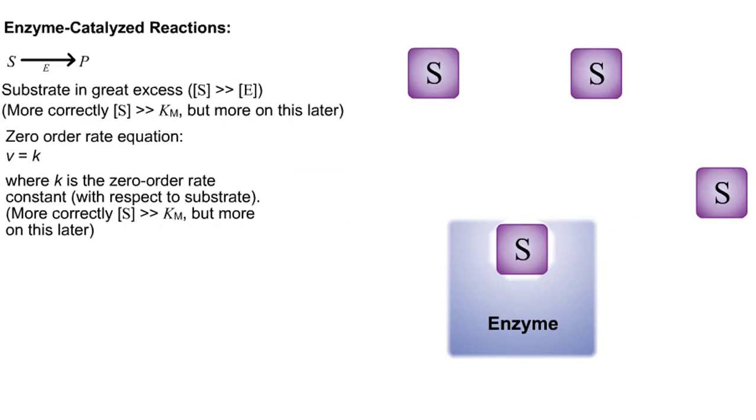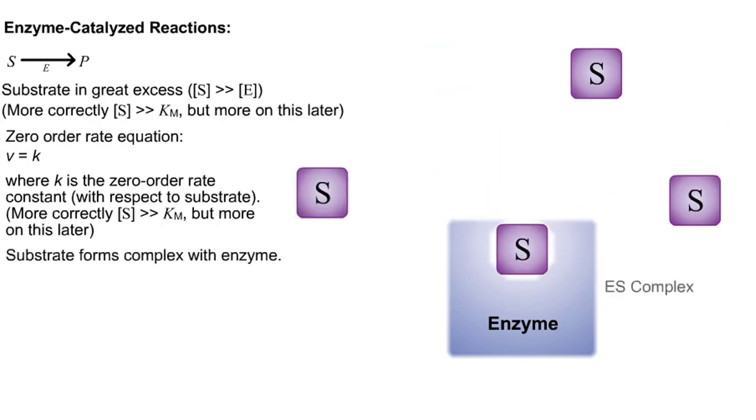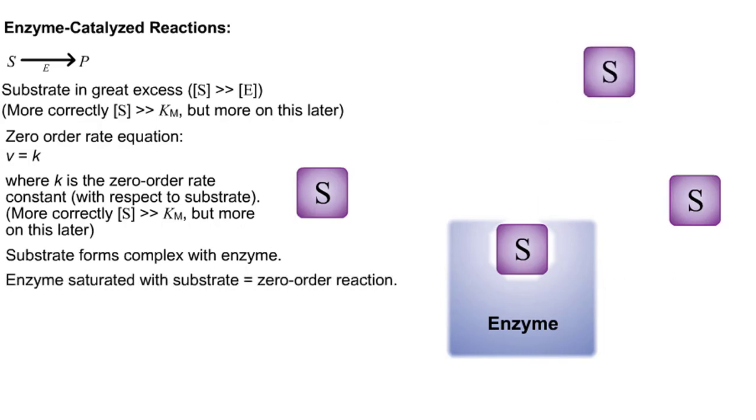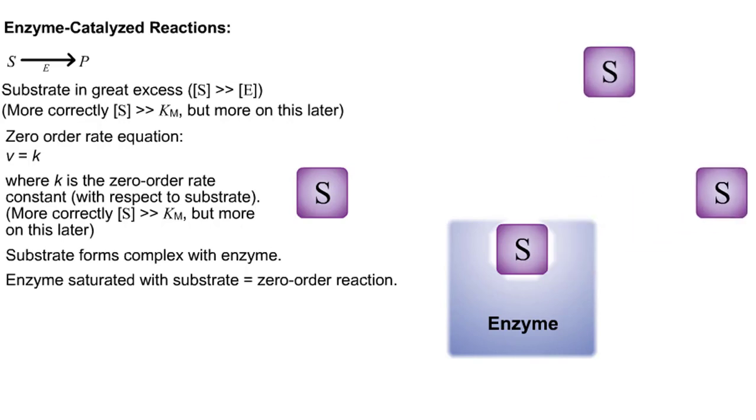Near the turn of the 20th century, Adrian Brown first discovered this conflicting behavior of enzyme-catalyzed reactions. It became apparent to him that the substrate must form a complex with the enzyme. This observation marked the beginning of the study of enzyme kinetics. Brown correctly deduced that a zero-order reaction with respect to substrate occurred when the enzyme was saturated with substrate.